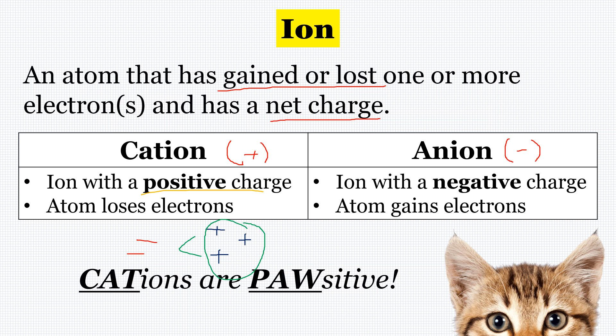Anions are the opposite — they're going to gain electrons. For example, if I have three electrons and three protons, and I gain another electron so now I have four electrons, the electrons are going to win because there are more of them.